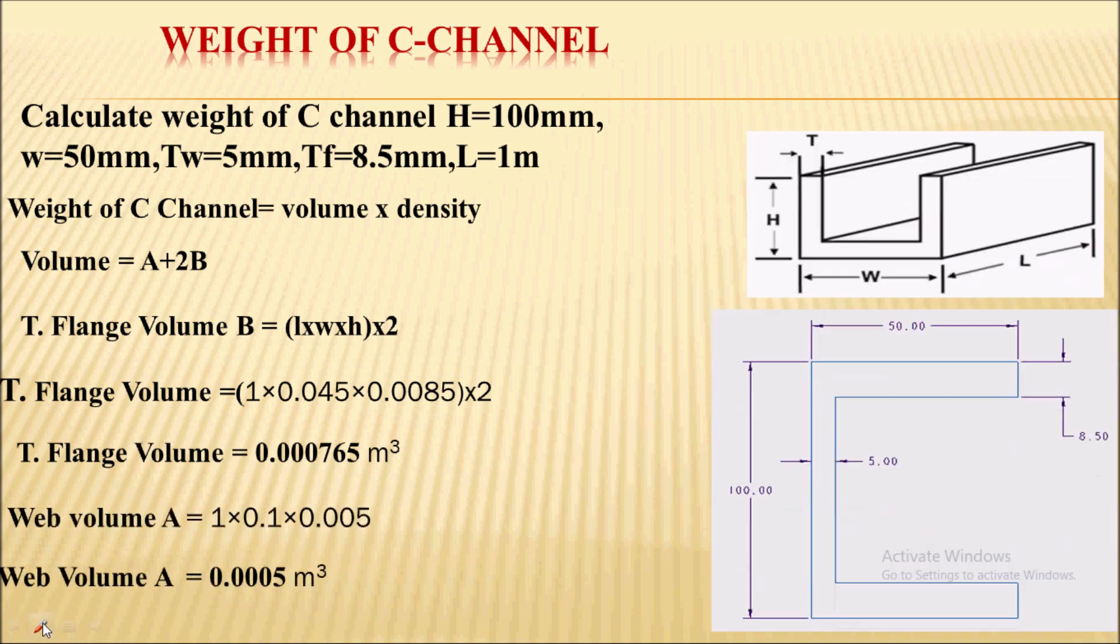To the right you can see a 3D view for the C channel. In C channel there are two portions. The horizontal portions are called flanges of C channel, while the vertical portion is called the web of C channel.